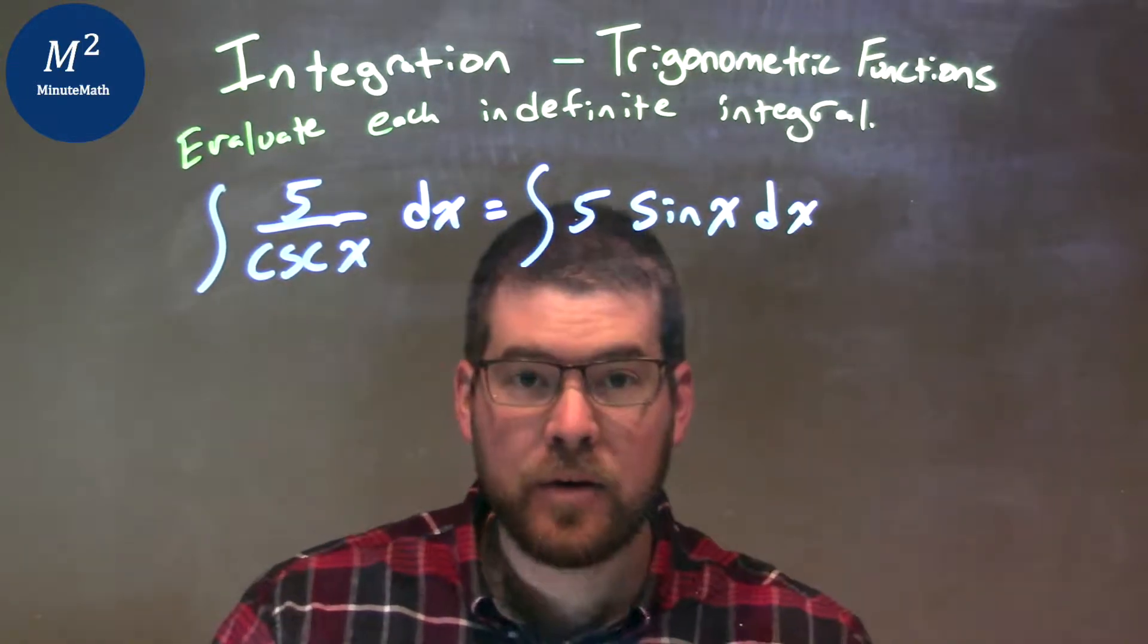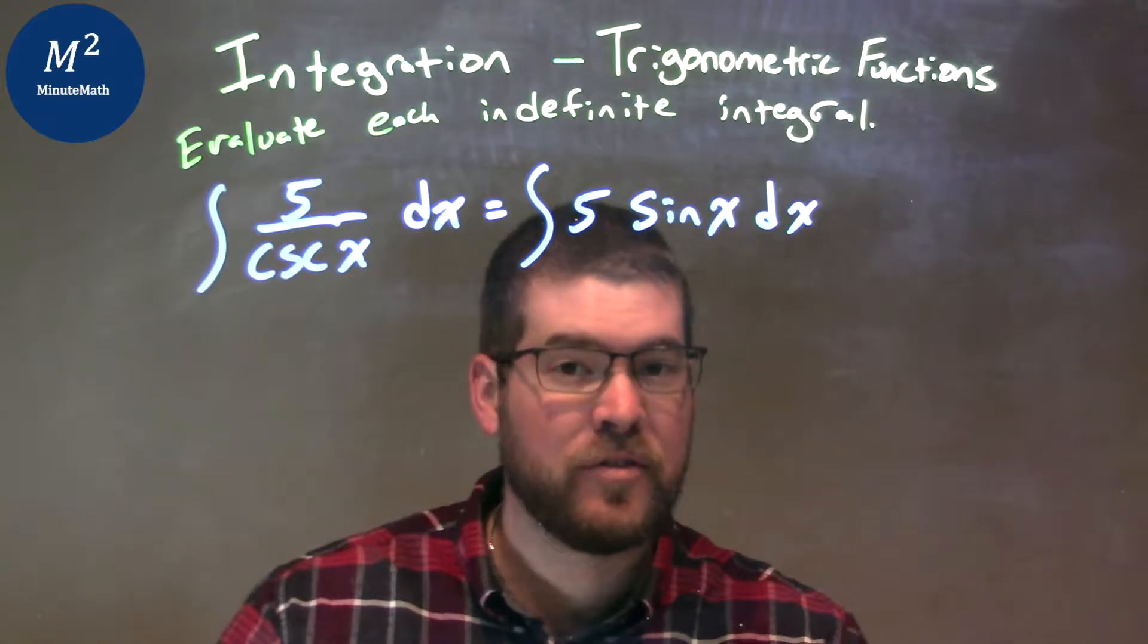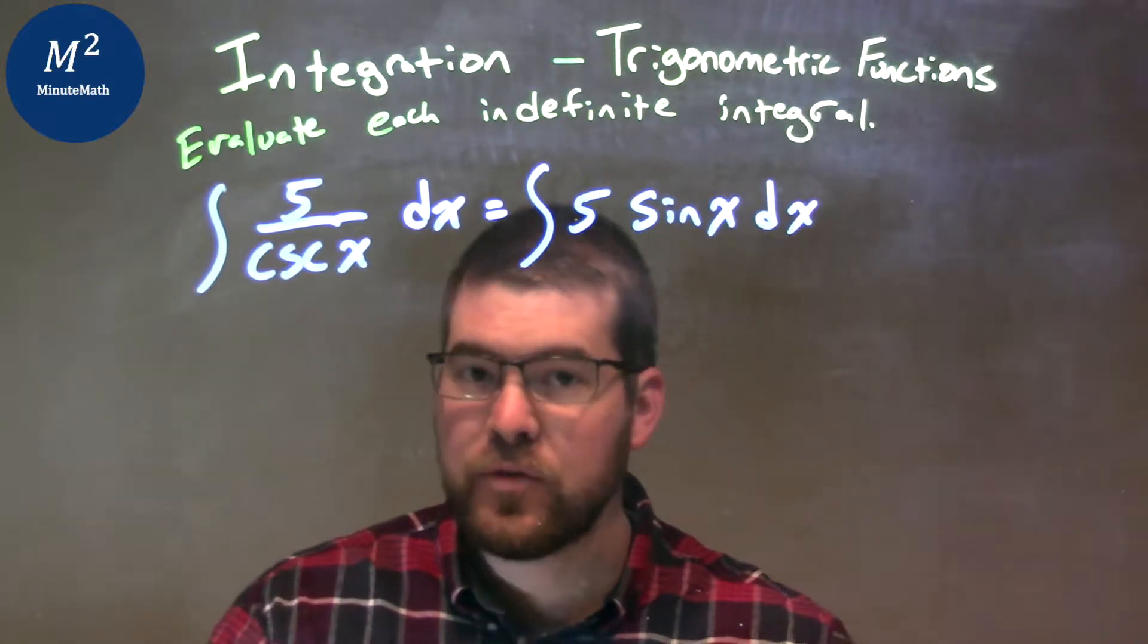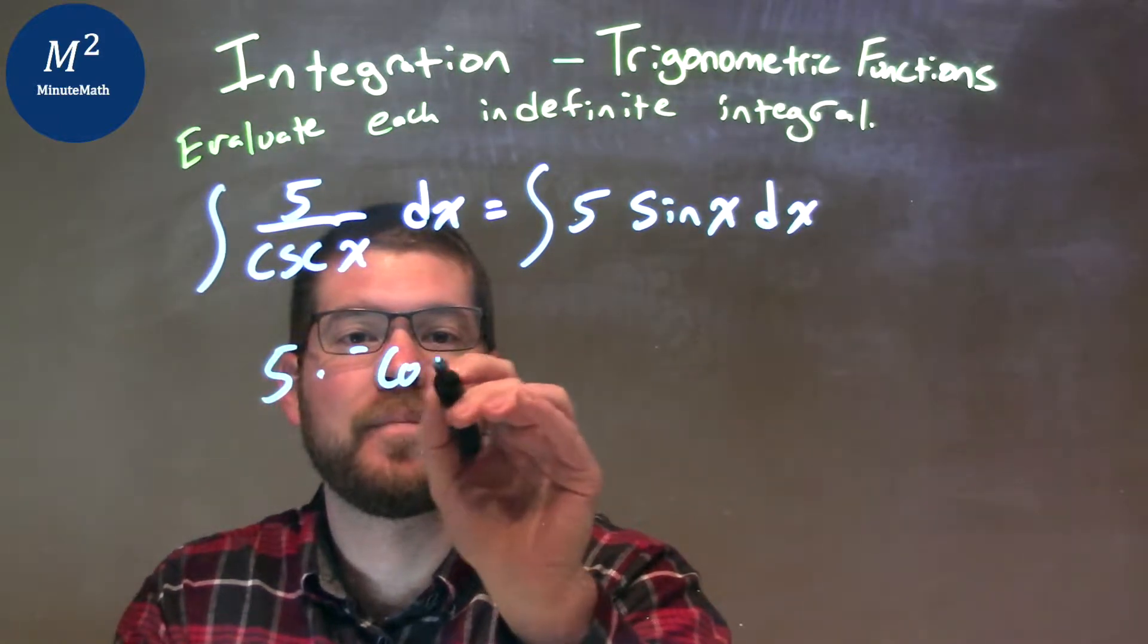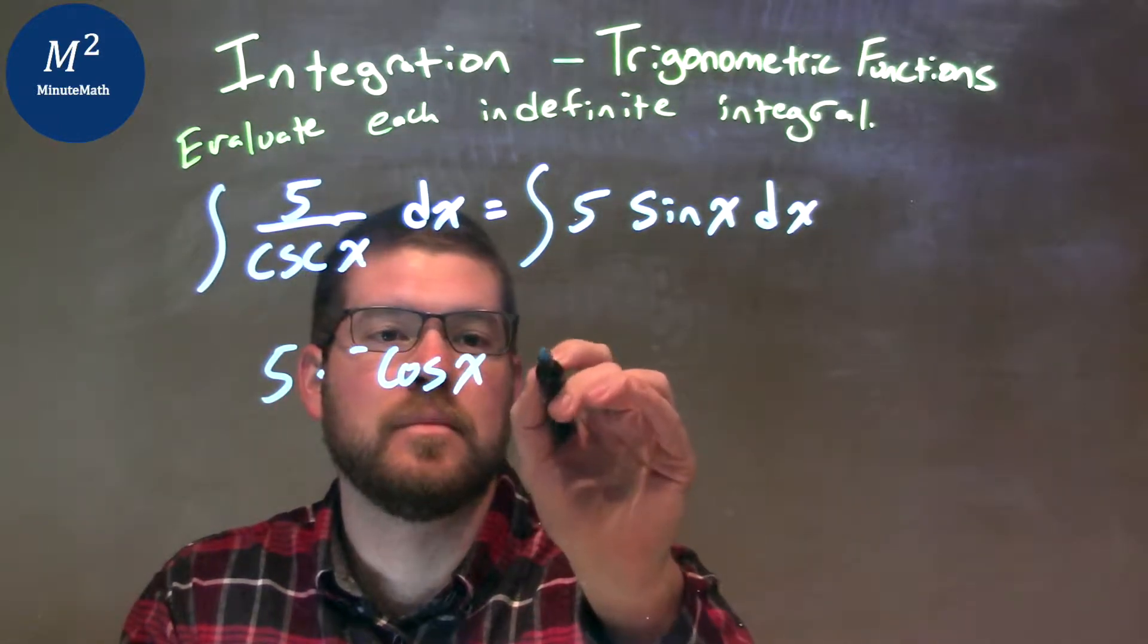Now, from there, I can take the integral. The integral of sine of x is a negative cosine of x, so we have 5, the constant, times a negative cosine of x plus c.